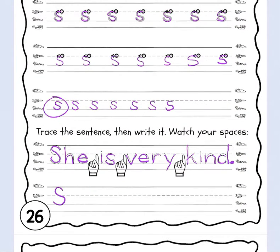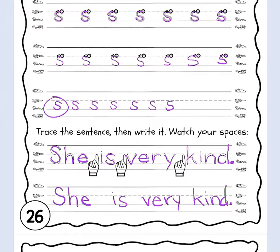Use your neatest handwriting to write it again on your own: She is very kind, period. You can go ahead and mark some of those words if you know what they need to have marked. Do you see a glued sound anywhere? Put a box around I-N-D for kind. This is a closed syllable exception because the I says I instead of I. And you are done with the letter S today.